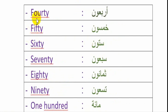إذن، رأينا الأعداد من 20 إلى 30. نضيف إلى كلمة 20 الأعداد من 1 إلى 9 للحصول على الأعداد حتى 30. والأعداد ما بعد العدد 30 سيكون بنفس الطريقة: إضافة الأعداد من 1 إلى 9 إلى العدد 30.